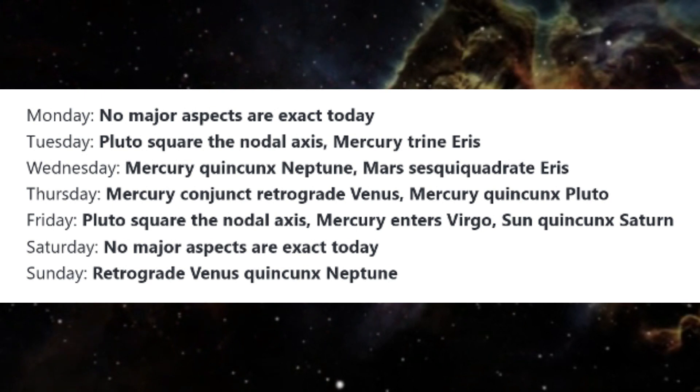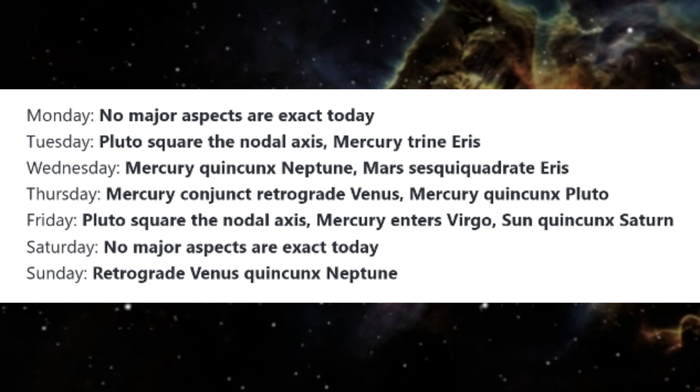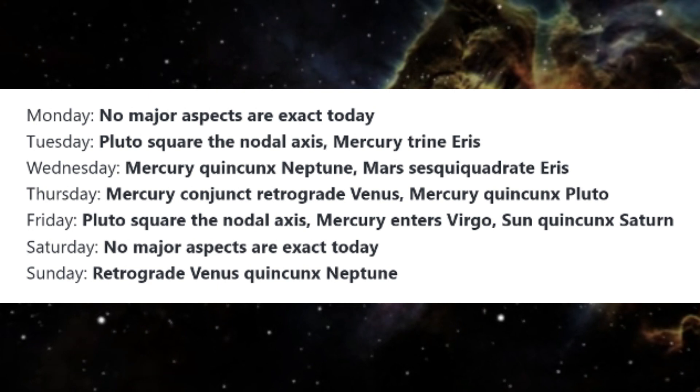Also on Tuesday, Mercury is trine Eris. People tend to be more forthright or even blunt with this aspect. We may be more concerned with making our opinions known than truly listening to others' views.